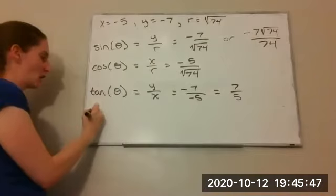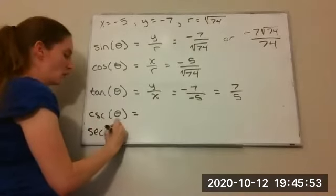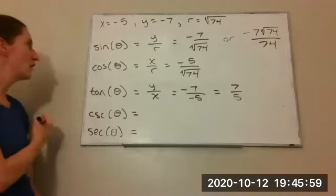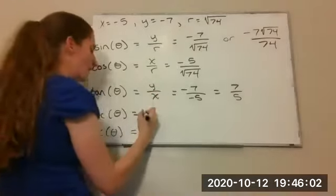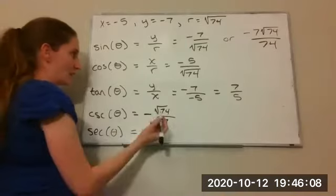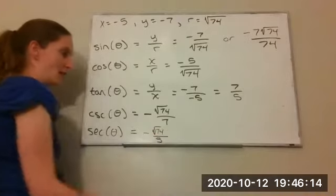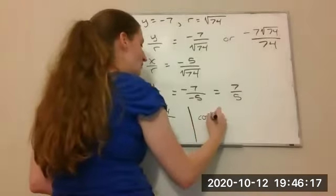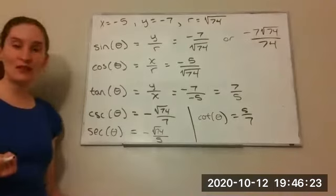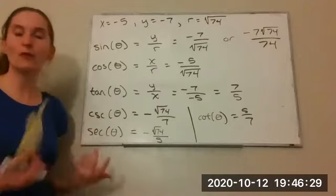For cosecant, secant, and cotangent, we can use the definitions we just learned or the reciprocal properties. Cosecant is 1 over sine, so I flip sine to get negative root 74 over 7. Secant is 1 over cosine, so I get negative root 74 over 5. Cotangent is 1 over tangent, so I get 5 over 7. Notice it doesn't matter whether you use the x, y, r definitions or the reciprocal trig properties — you get the same answer.